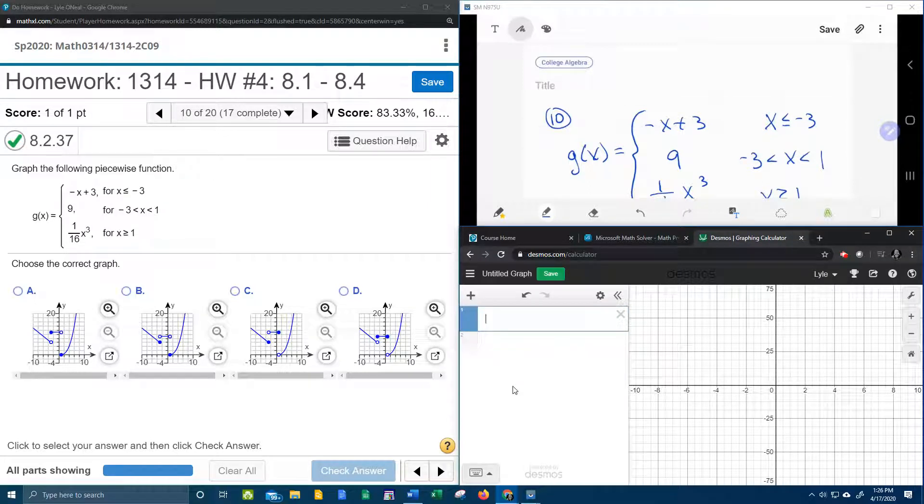All right, here we go. Question number 10 from our College Algebra Homework number 4 on MyMathLab. They want us to graph the piecewise function given here, and we don't actually have to graph it by hand. We just have to choose the correct graph.